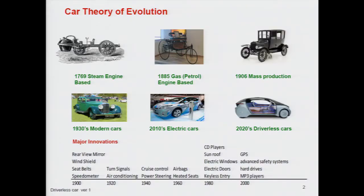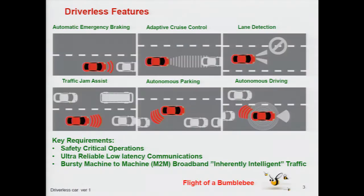A quick bit of history. We are in the driverless car era just like we have been talking about the industrial revolution. There have been revolutions all the way from 1769 to the 2020s. The latest innovations have been in electric cars, and the next is expected to be the driverless car. These slides are available on the web so you can access some of the details.